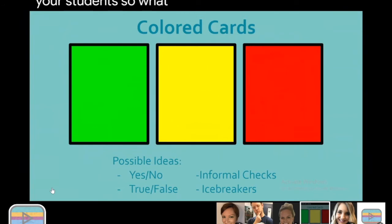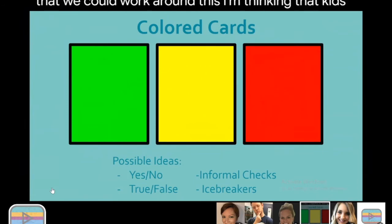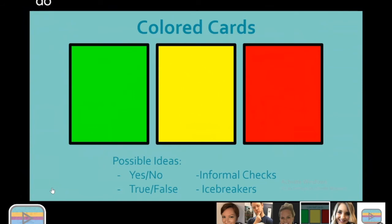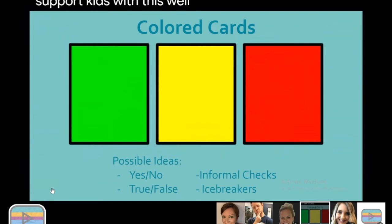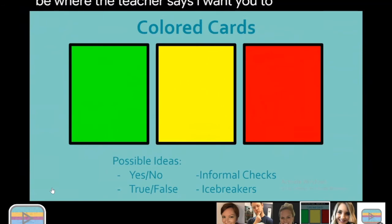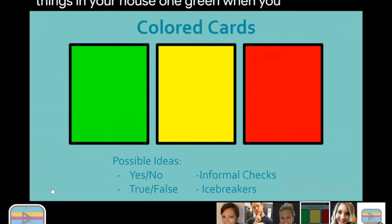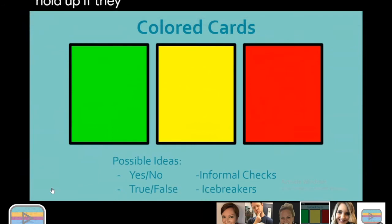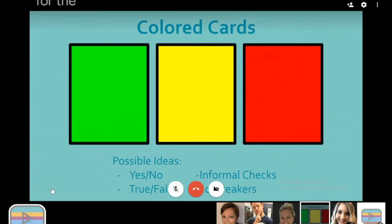What if we don't get kids these cards? Kids could just color a card — perhaps an index card with different colored crayons or markers. On the elementary side, a lot of schools were sending home supplies with kids. The teacher could even say, 'I want you to go find three things in your house — one green, one yellow, one red.' Then they can hold those up instead of an actual card. And that's a good way for the littles to also check that they know their colors.